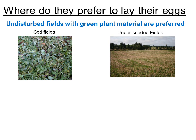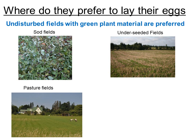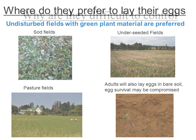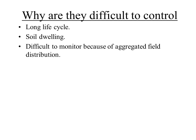Why are they difficult to control? One problem is this really long life cycle — you basically have to kill them every year. Our species is in your field for five years. They're soil-dwelling, so we don't know where they are in the soil profile. They have an aggregated distribution in the field — they are in different areas — and you may miss them when monitoring just because they are aggregated.